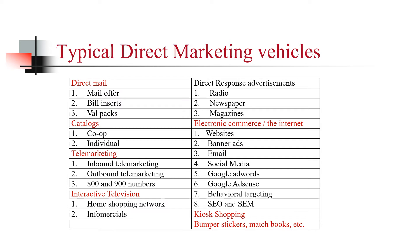SEO is more organic in its nature — that is search engine optimization. SEM, which is search engine marketing, is more paid-oriented marketing in terms of Google. There is kiosk shopping — when you go to the airport and you can buy attachments for your iPhone that you forgot at home. And then of course there are all sorts of other direct marketing vehicles like bumper stickers, matchbooks, and all of the other collateral material that companies buy and distribute.